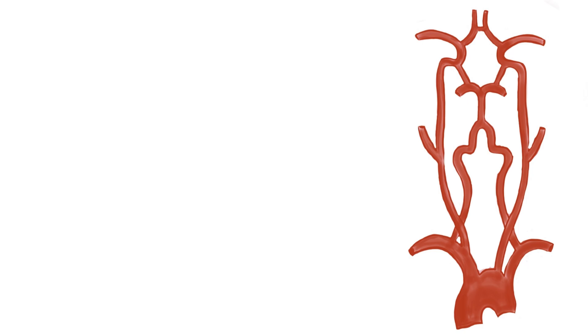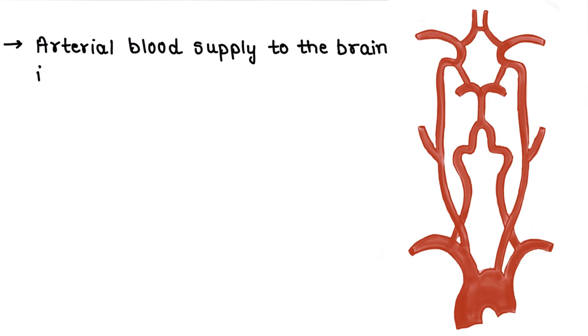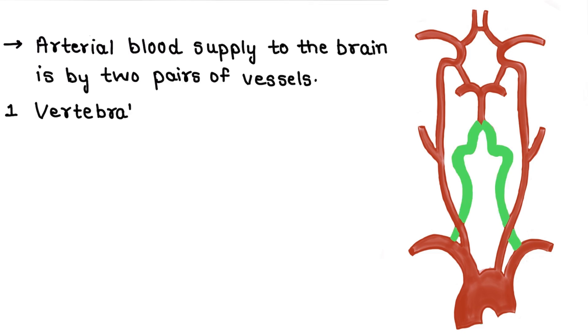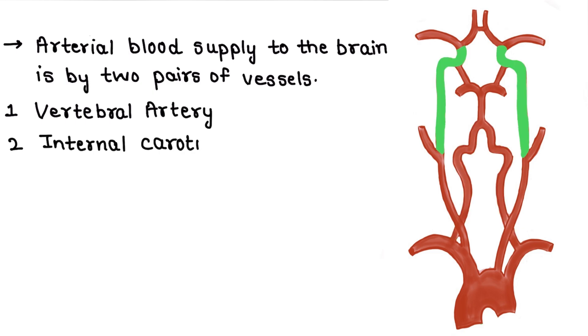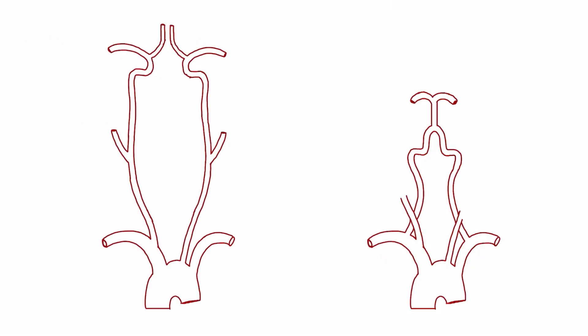First, to simplify things, let's see the formation of the Circle of Willis and then we'll see its anatomical location. Arterial blood supply to the brain is by two pairs of vessels: the vertebral artery and the internal carotid artery. These two major arteries give off branches that form the Circle of Willis. Let's understand these two arterial systems separately and then combine them together.